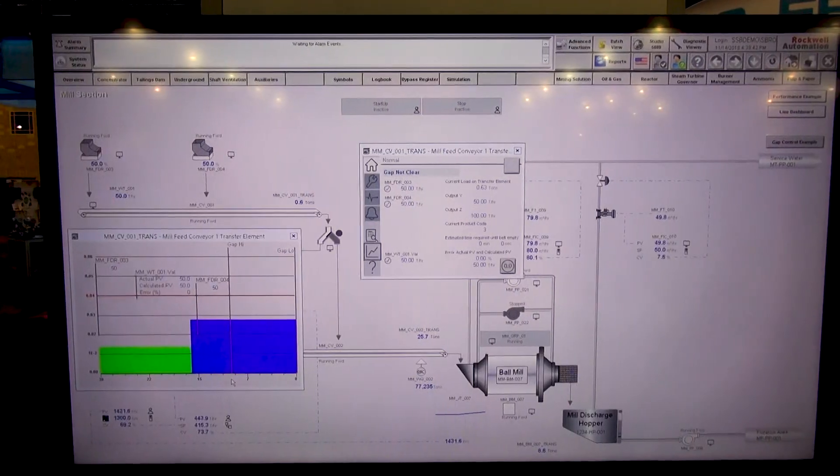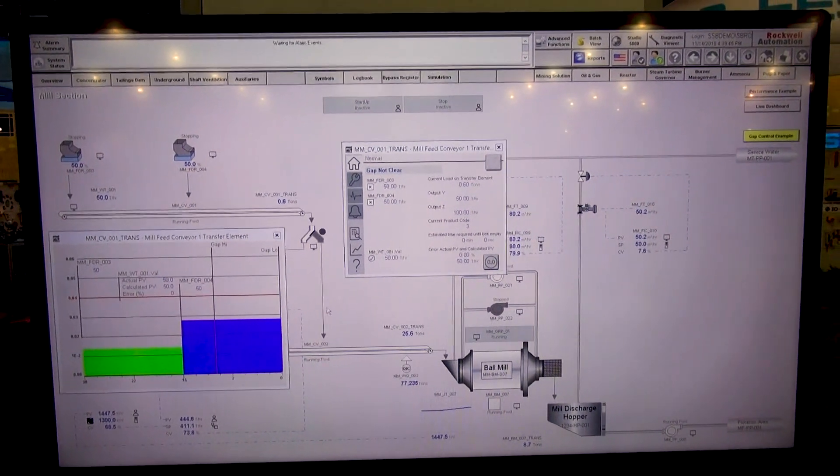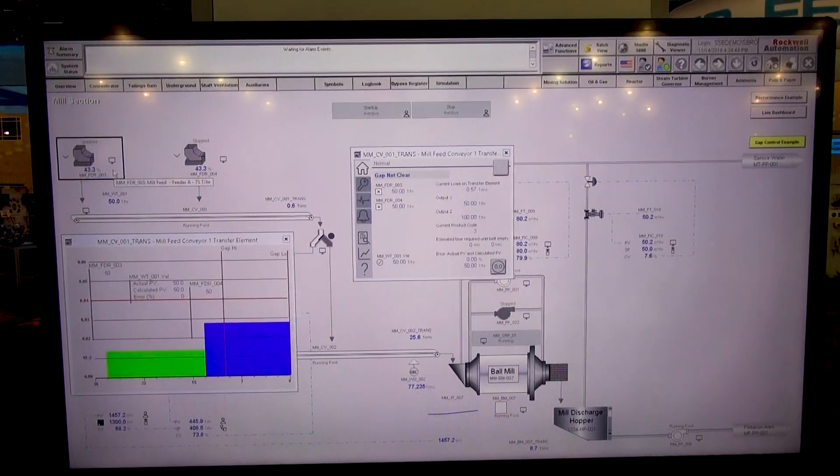I'm just going to trigger an example which essentially issues a stop to both feeders and you see the product moving towards the head of the conveyor and we're tracking it.